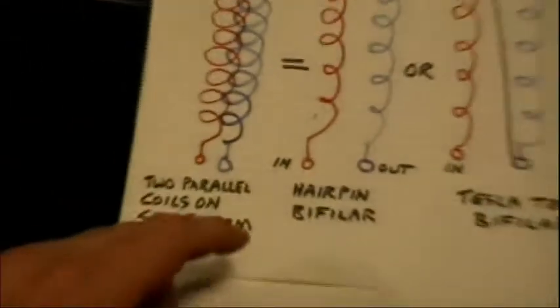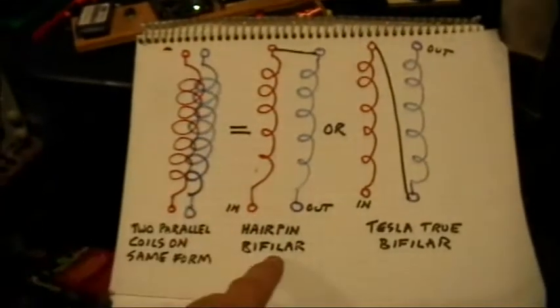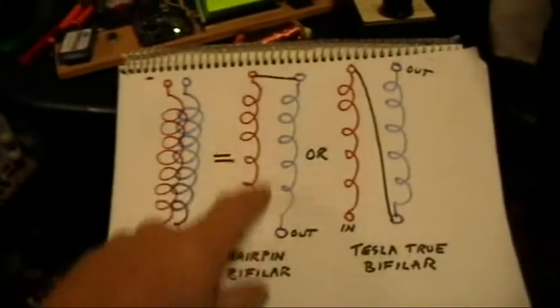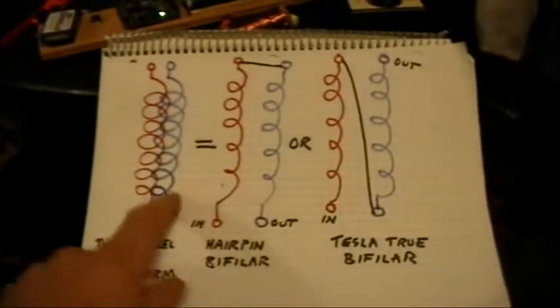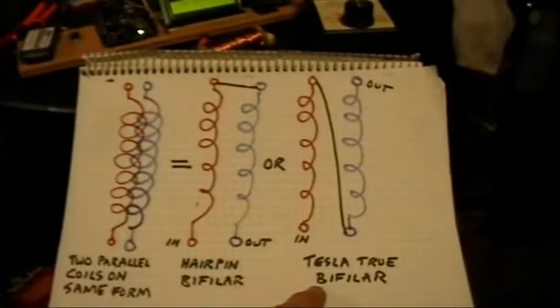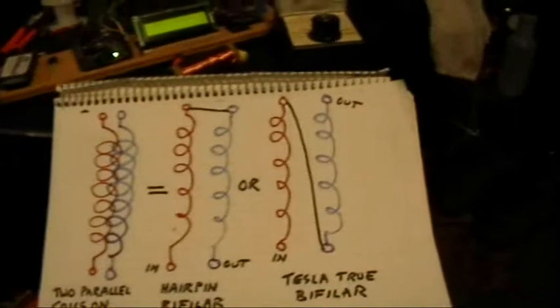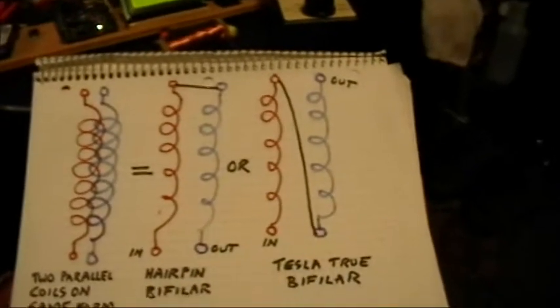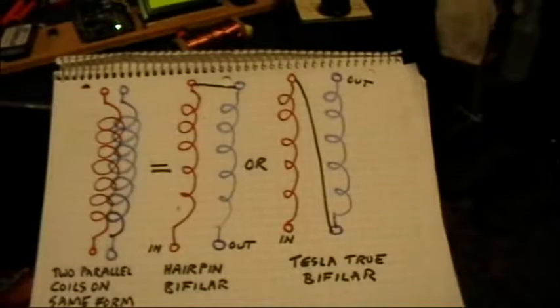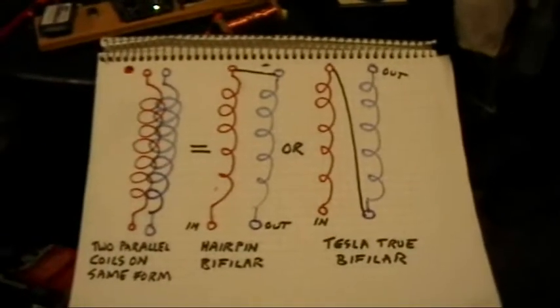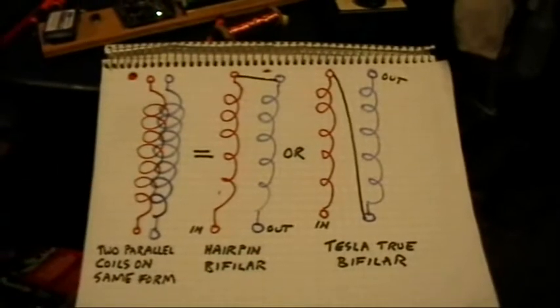All right, so that's the difference between a hairpin bifiler which cancels out the inductance and creates no magnetic field, because they cancel at every step of the way, and a true Tesla bifiler which actually increases the coil's self-inductance, increases the interturn capacitance, and creates a good strong magnetic field. Thank you for watching.